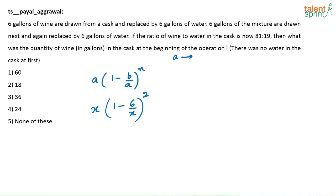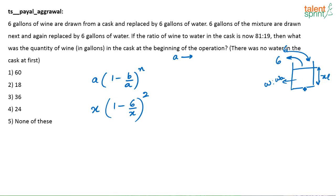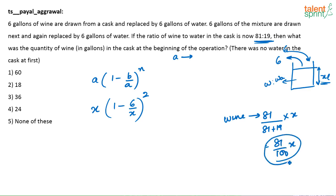What is the final quantity of wine present? There was totally x liters. After all 2 operations, the vessel still has x liters — but it is wine and water mixed. The vessel before the operations had x liters of wine; after all operations it has x liters of wine and water mixed — the total x liters is the same before and after. Now wine to water is in the ratio 81:19, so the quantity of wine is 81 divided by (81 plus 19) into x, which is 81 by 100 of x. Equate this to the formula result.